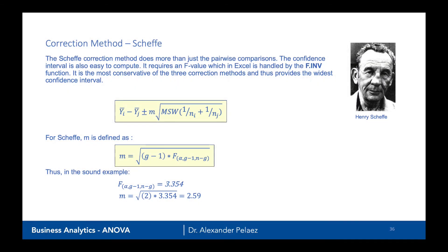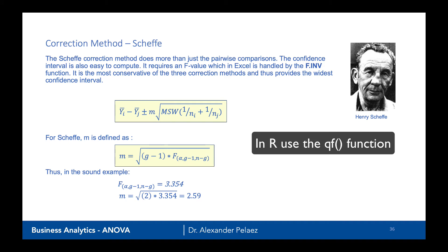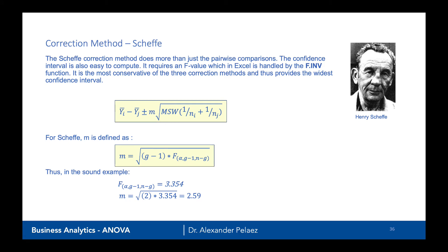The final method is the Scheffé method. It can do more than just pairwise comparisons, but we'll use it for pairwise here. It requires an F value — we compute a different F statistic using the f.inv function in Excel or the qf function in R. It is the most conservative of the three correction methods and provides the widest confidence interval. When we say conservative, we mean we want to be very sure there's a difference between groups, so the wide interval ensures the best chance of spanning zero — if it's really wide and still doesn't span zero, you can be very sure the two groups are different.